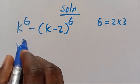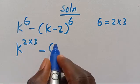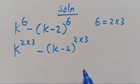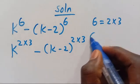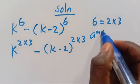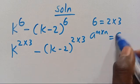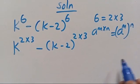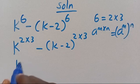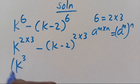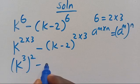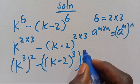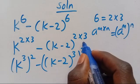So here we have K to the power of 2 times 3 minus K minus 2 in parentheses to the power of 2 times 3. Recall that when we have A to the power of M times N, it equals A to the power of M in parentheses to the power of N. Applying it here, we have K to the power of 3 in parentheses to the power of 2, minus K minus 2 in parentheses to the power of 3, again to the power of 2.